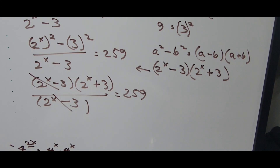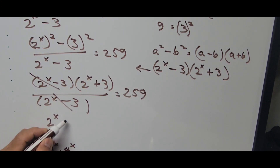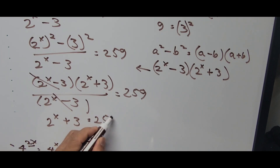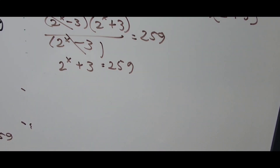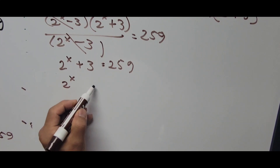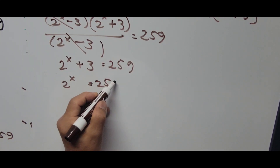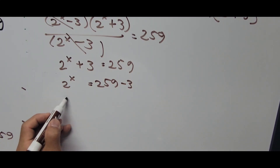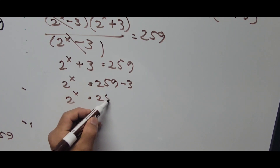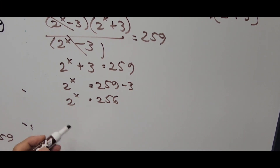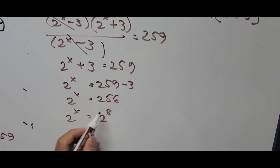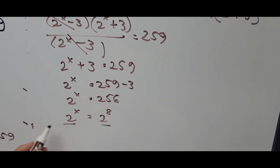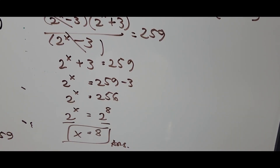The (2 raised to x minus 3) terms cancel, leaving 2 raised to x plus 3 equals 259. So 2 raised to x equals 259 minus 3, which is 256. Since 256 equals 2 raised to the 8th power and they have the same base, x equals 8.